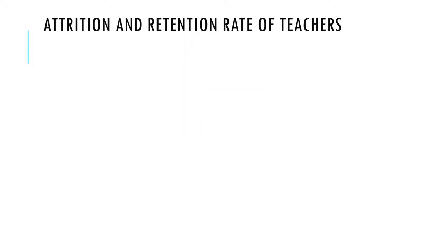Now we look at the attrition and retention rate of teachers. Two things are bound to happen: the rate at which teachers leave the school and the rate at which they are able to be retained within the school. There are factors that are responsible for this.